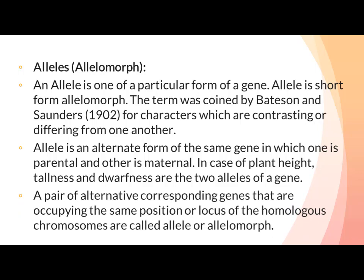A pair of alternative corresponding genes occupying the same position or locus on homologous chromosomes are called alleles or allelomorphs. Gene chromosome پر present ہوتے ہیں — ایک member ایک chromosome پر اور دوسرا member دوسرے chromosome پر present ہوتا ہے، اور ان کی position بالکل same ہوتی ہے۔ یہ دونوں members ایک دوسرے کے alleles کہلاتے ہیں۔